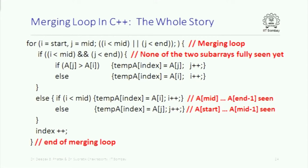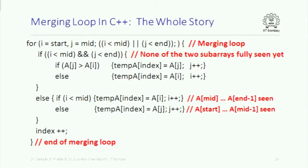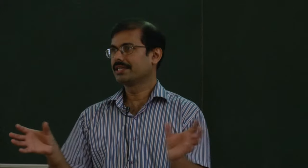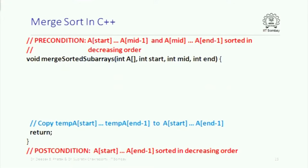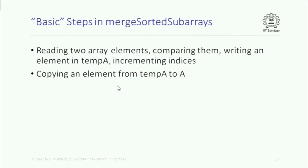After the merging loop, the sorted array is now in tempA. We copy it back to A because we finally want A to be sorted, iterating between indices start and N minus 1.